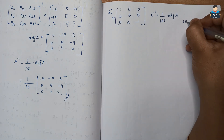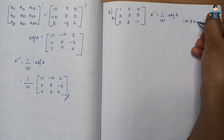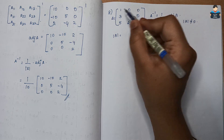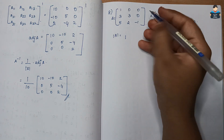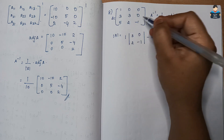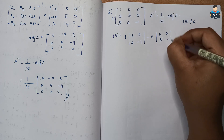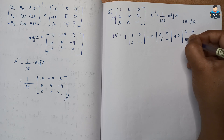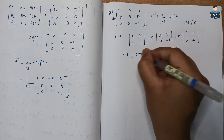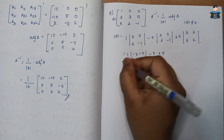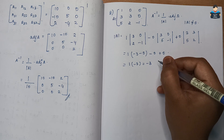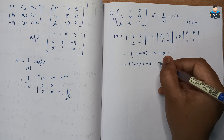The determinant of A should not be equal to 0 for the inverse to exist. Expanding along the first row with elements 1, 0, 0, we compute the sub-determinants. For the 1st element: 3×0 minus 5×(−1) gives minus 3. So determinant of A equals minus 3, which is not equal to 0, so the inverse exists.